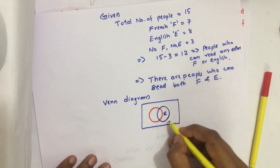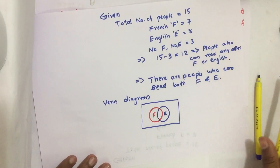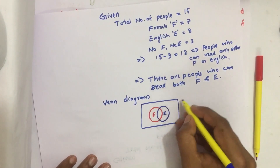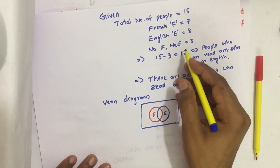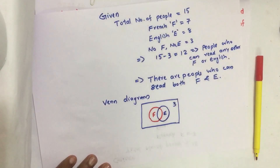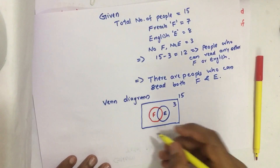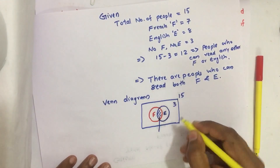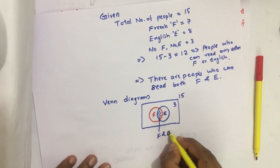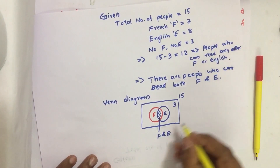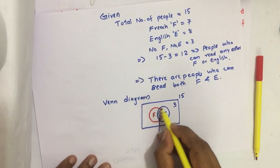This circle indicates people who can read English, and this circle indicates people who can read French. Out of these two circles, the total is 15. The overlapping area indicates people who can read both French and English, and we have to find this area.